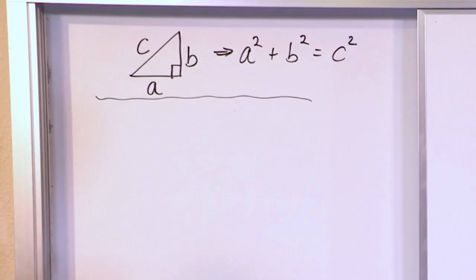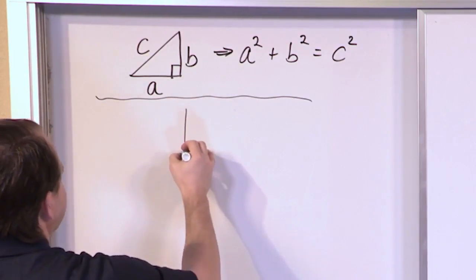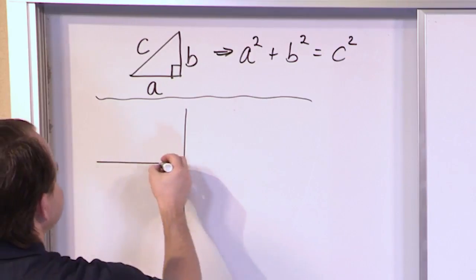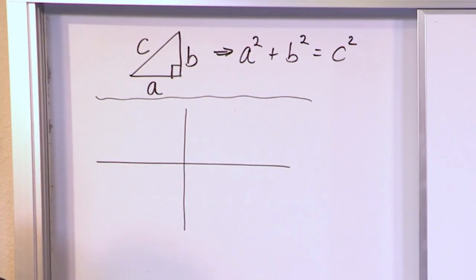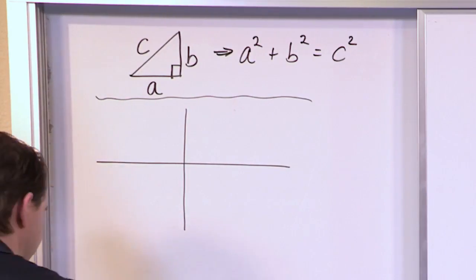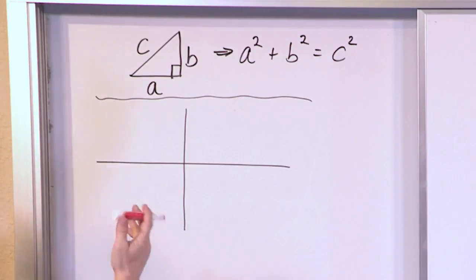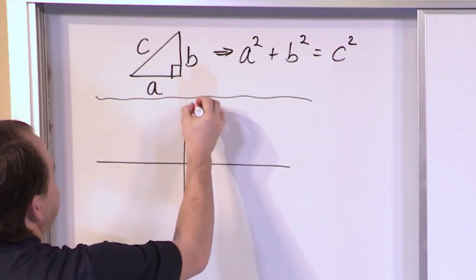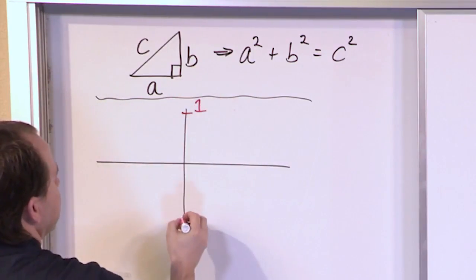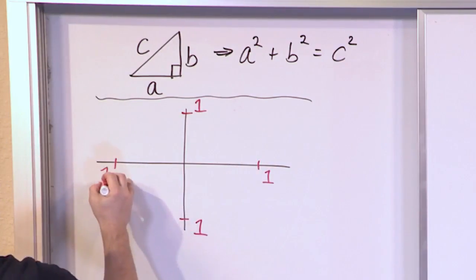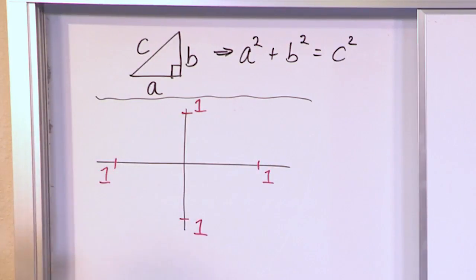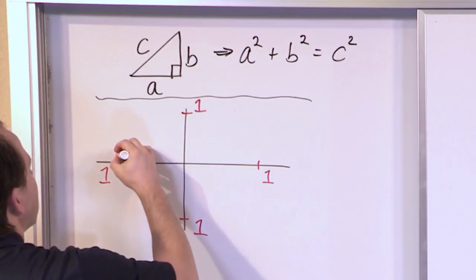Now, instead of thinking in terms of triangles, think about the unit circle. Let me draw a unit circle here — we use it all the time in trig and precalculus. When we say unit circle, it just means it has a radius of one. I'm going to put ones everywhere just to remind you that we're talking about a circle with radius one.